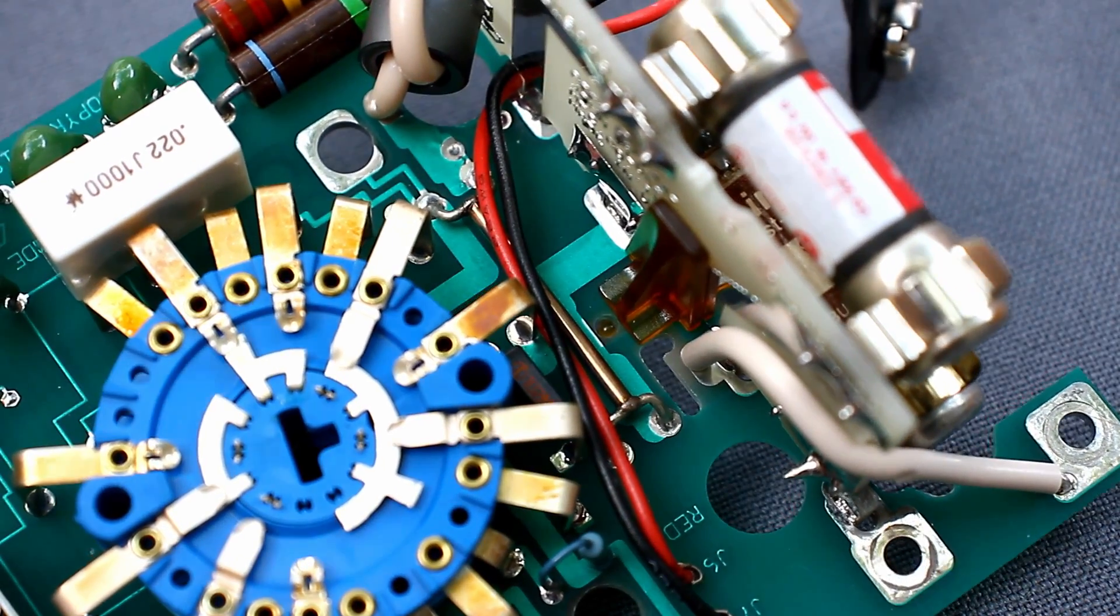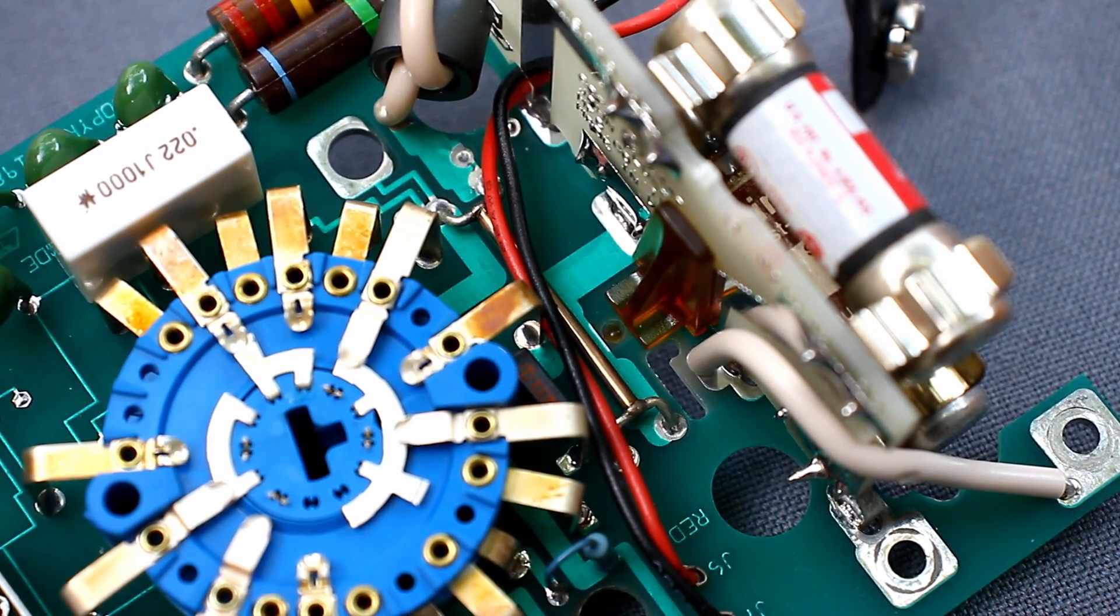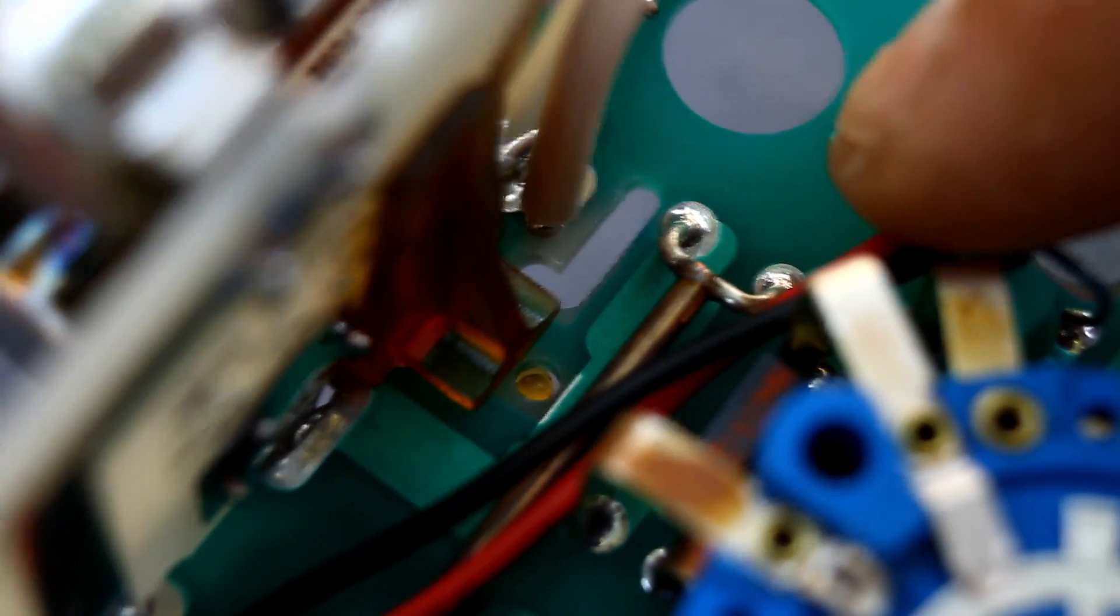On the board, we see a current shunt. I saw such a solution in expensive units. Here, current measurements are made using a 4-wire circuit to increase the accuracy of the readings.